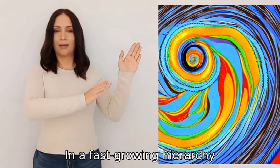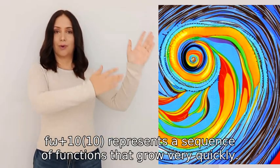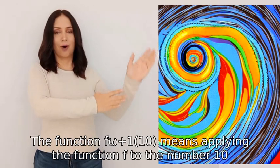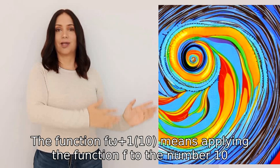In a fast-growing hierarchy, the notation f(ω+1), f(ω+2), f(ω+10) represents a sequence of functions that grow very quickly. The function f(ω+1) means applying the function f to the number ten, where f is the next function in the hierarchy after the omega function.